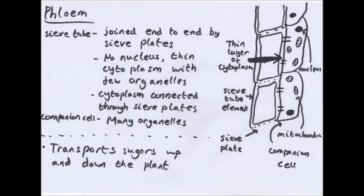Phloem is slightly more complicated. It has a main cell called the sieve tube, and also a companion cell. The function of phloem is to transport sugars from one part of the plant to another, so this can be up or down the plant. While xylem transports water only upward, phloem is bidirectional. Sugars are produced at sources — generally places like leaves where photosynthesis occurs, producing glucose — but some is converted to sucrose for transport, as sucrose is easier to transport than glucose.